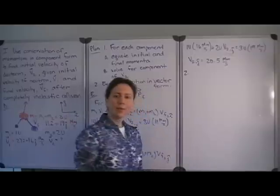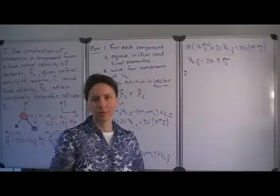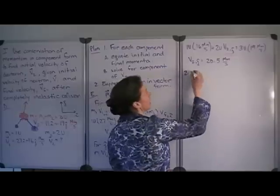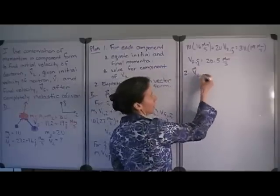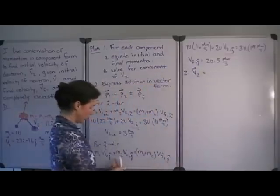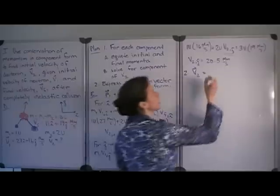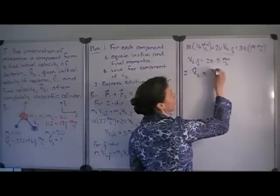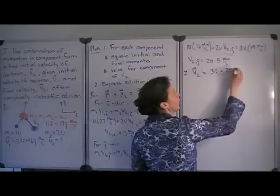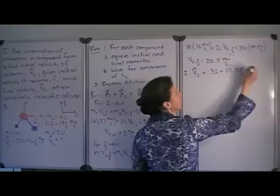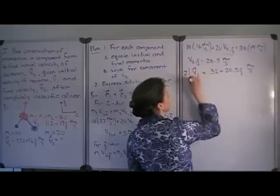Now that we have each component of the deuteron's velocity, we need to express that in vector form. The velocity of the deuteron is equal to 3 megameters per second in the I direction and 20.5 megameters per second in the J direction.